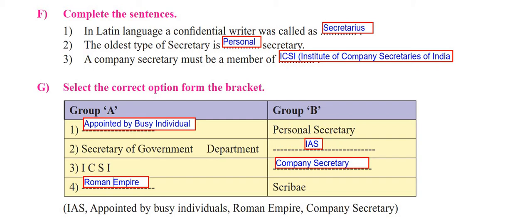Question number 1F - complete the sentences. There are only 3 in number but very, very important. The first one: in Latin language, a confidential writer was called as - the correct answer is Secretarius. Then second, the oldest type of secretary is definitely personal secretary. Even in the oldest times, people used to have personal secretaries - those who were very busy in their lives definitely had personal secretaries.